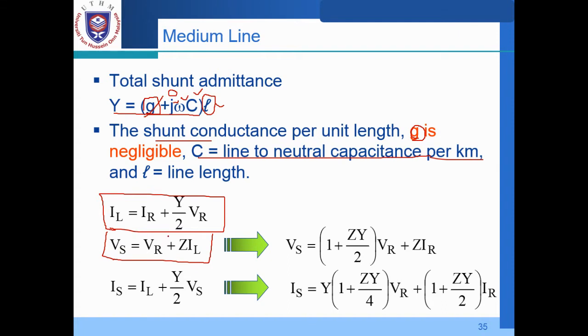And then rearrange. So we have the relationship: IL equal to IR plus Y over 2 VR into this IL. So everything here, IR plus again Y over 2 VR into this IL and rearrange, you may get this relationship: VS equal to (1 plus ZY over 2) VR plus Z times IR. So the IR and the VR.